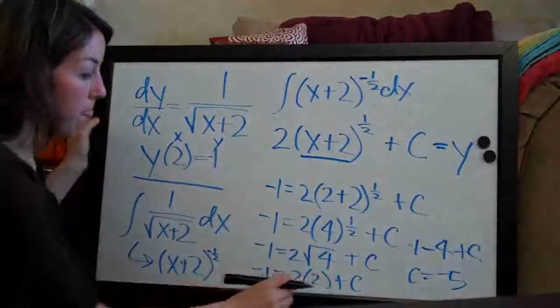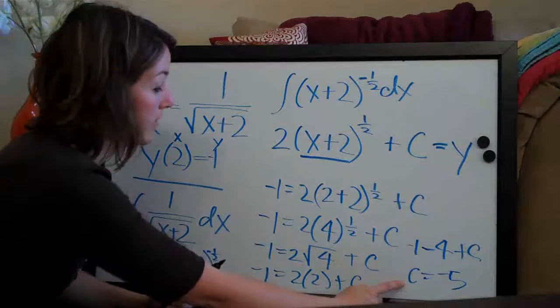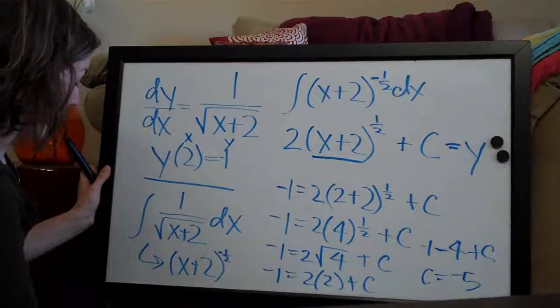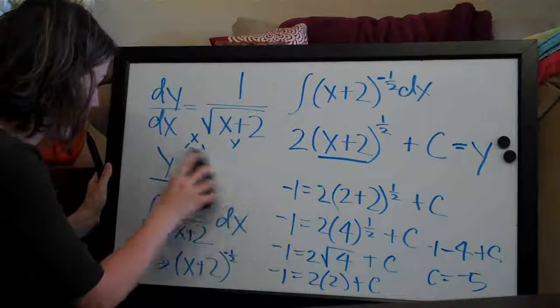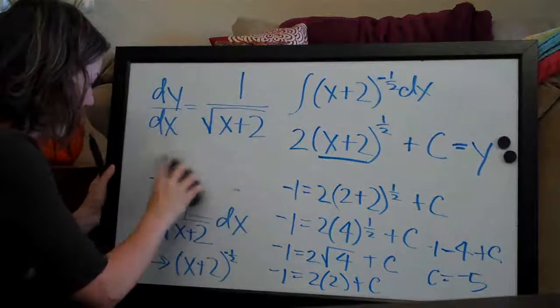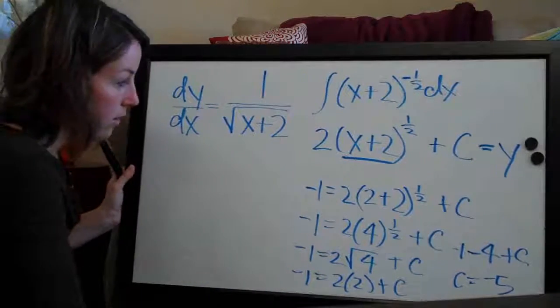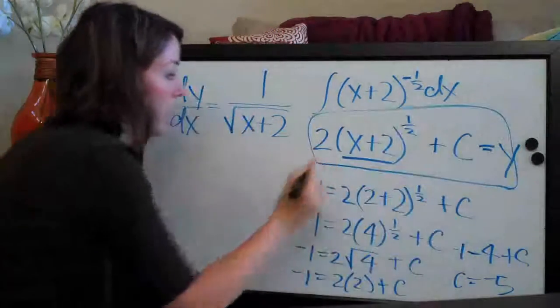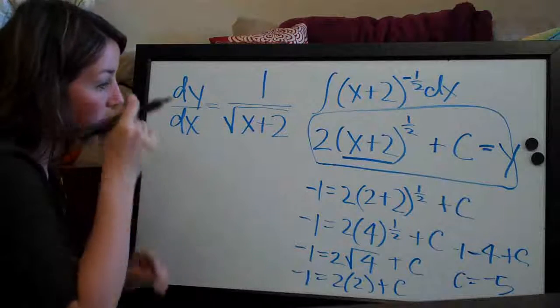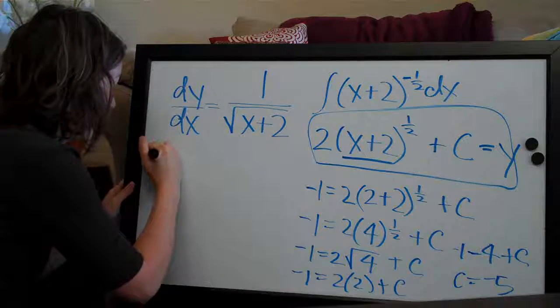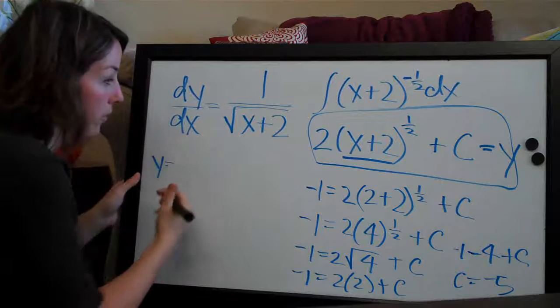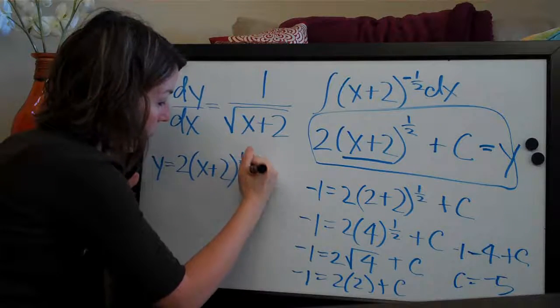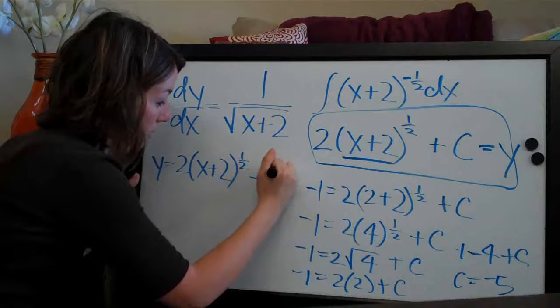So that's the simplification involved in finding c. Now that we've found it, all we need to do is plug back in. So I'm actually going to just erase this section so that I have more room to write. We're going to plug c back in to this equation here and then just simplify a little bit. So we will say y equals 2 times x plus 2 to the 1 half, and then c is negative 5, so we say minus 5.